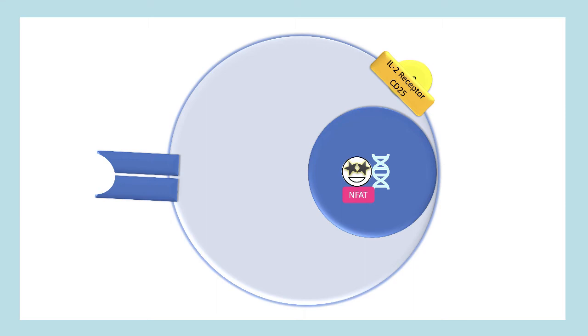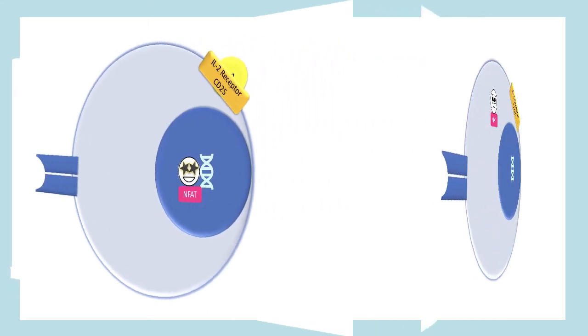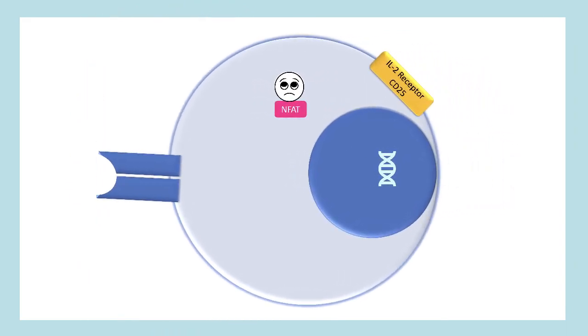But NFAT can only do this coffee run if it's free to travel to the nucleus in the first place. And rather deliberately, in a resting T-cell, NFAT is kept far away from the nucleus because we don't want the T-cell just spontaneously activating itself for no reason.